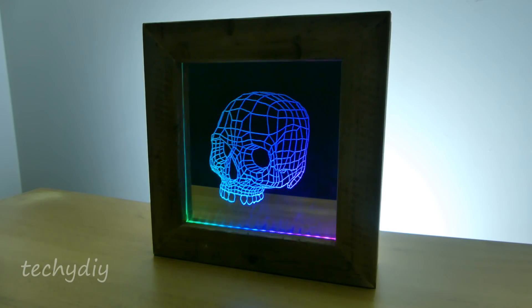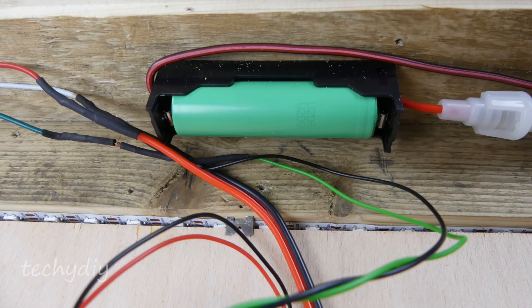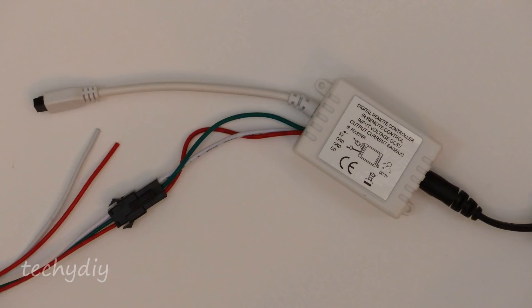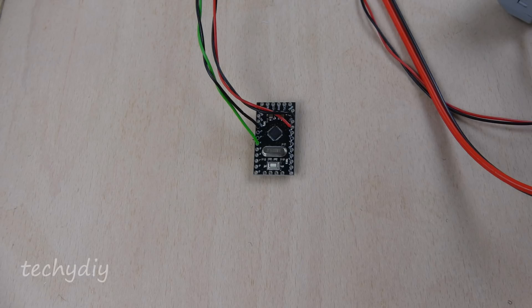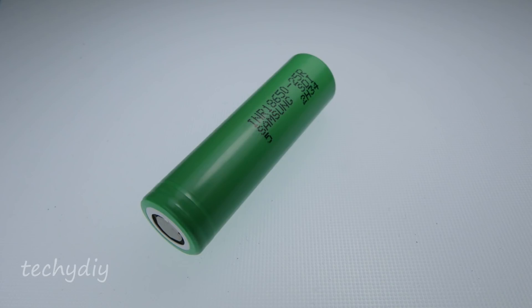Firstly I'm going to replace the image on the mirror with a 3D skull design. Next I will install a rechargeable battery to make the mirror portable. And finally I'll replace the LED controller with an Arduino microcontroller to program custom lighting sequences.